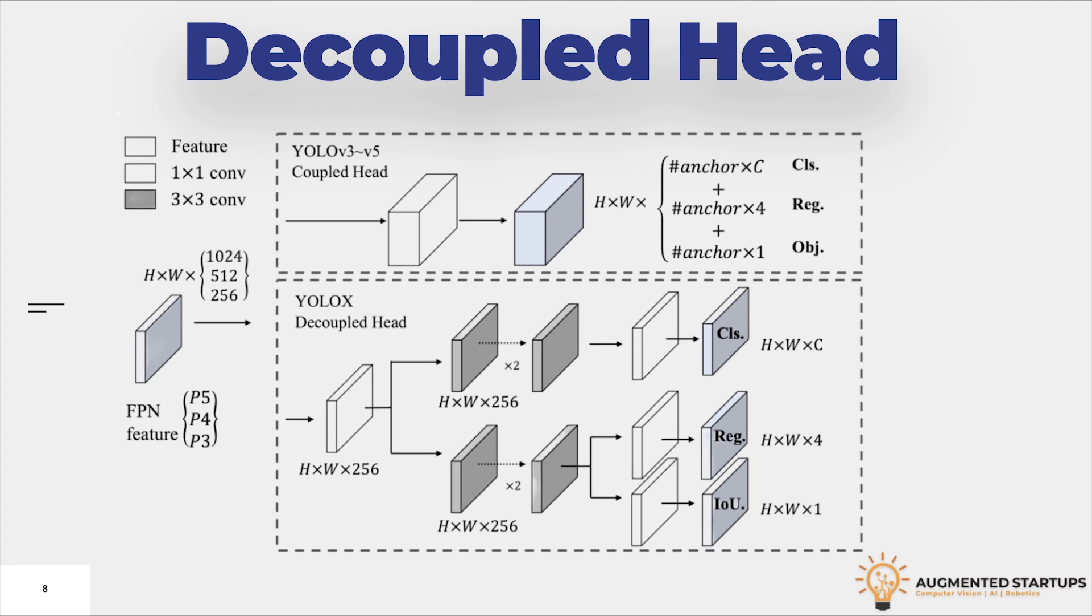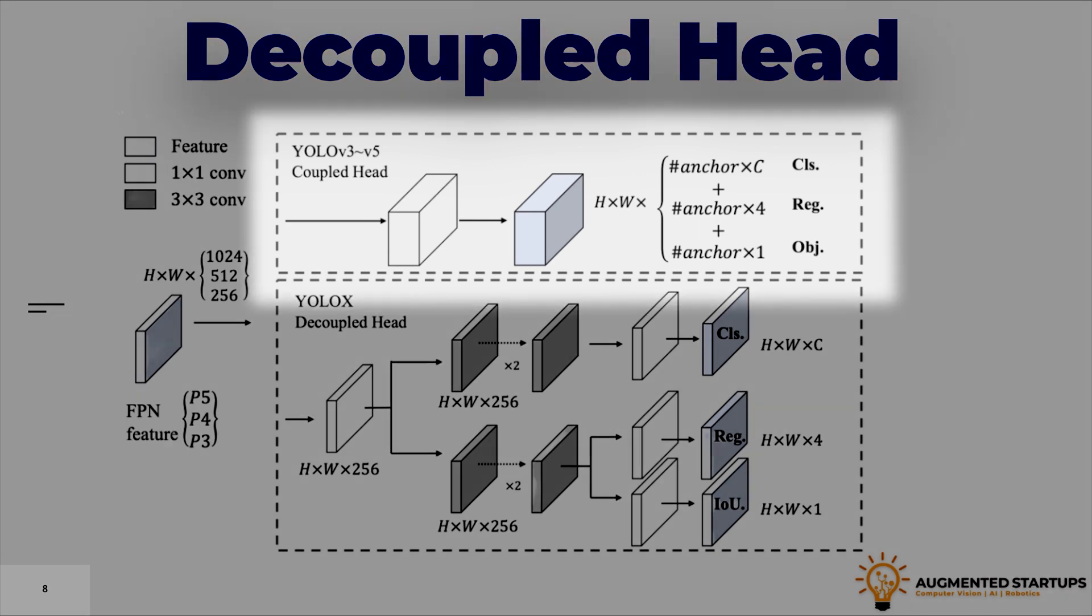Previous versions of YOLO series were using a coupled head pipeline. As you can see in the topmost section of the image, they are using a single pipeline for classification and regression. To find out if there is any room for improvement, the research team ran an experiment to understand the impact of decoupled head.